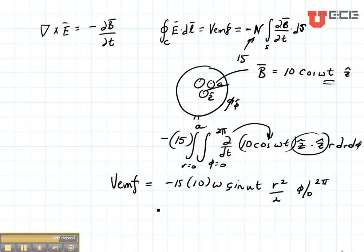If we wanted to know the current in the loop, we would take VEMF and we would divide it by R. So I is going to be VEMF divided by the resistance of the loop.